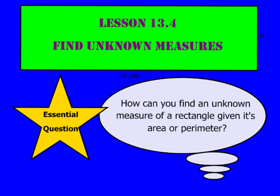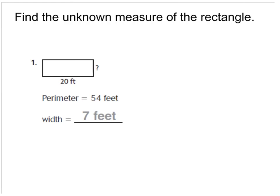Tonight's lesson is lesson 13.4, Find the Unknown Measures. The essential question is: how can you find an unknown measure of a rectangle given its area or perimeter? Tonight we'll be working on page 253 in your GoMath book. For tonight's lesson we're going to be finding the unknown measure — they're going to give us some clues and we have to figure out what the missing measure is.